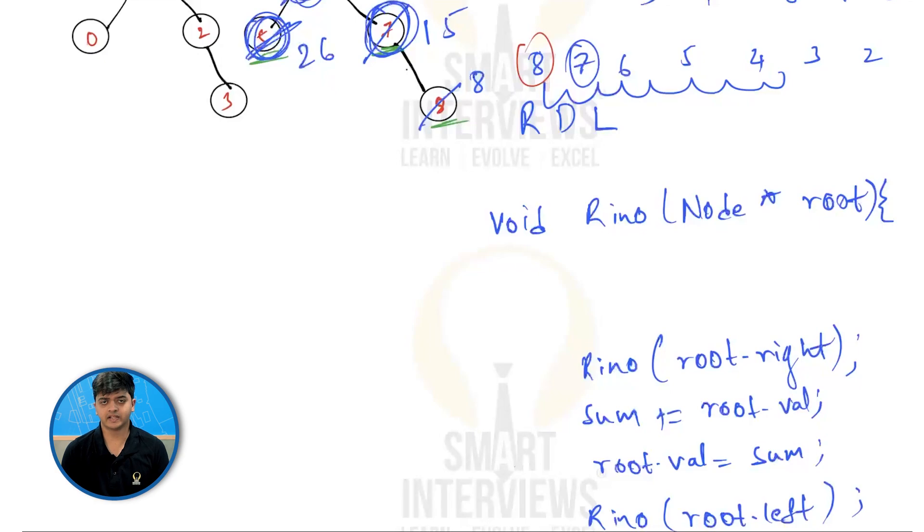This is the main logic for your code. Now, since this is a recursive function, every recursive function should have a base condition. What will be the base condition for this? It's the regular base condition for any in-order. If root is equals to null, you'll simply return.